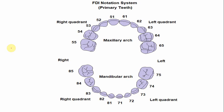In the FDI annotation system, for the right maxillary first deciduous molar, the number is 54. Here, 5 indicates the right quadrant of the maxillary arch, and 4 indicates that it is the first deciduous molar. Similarly, on the left side, the number is 64, where 6 indicates the maxillary quadrant of the left side, and 4 indicates the tooth number.